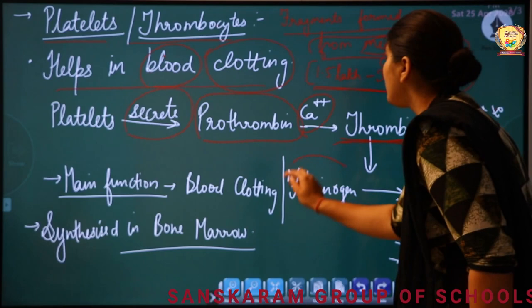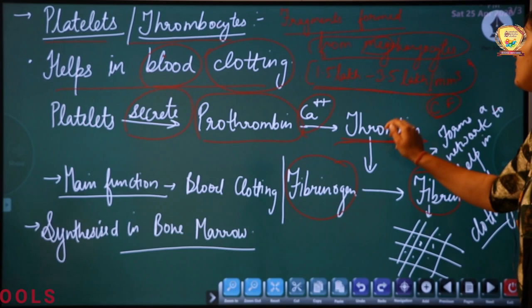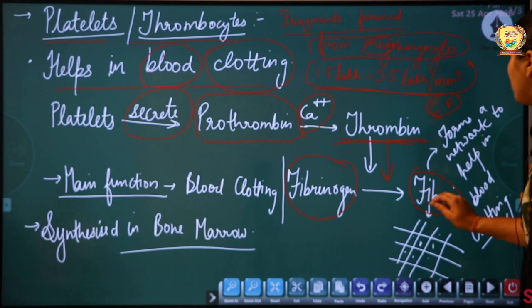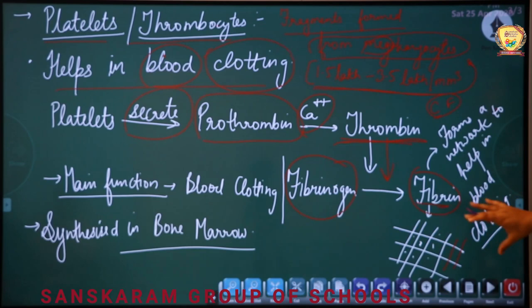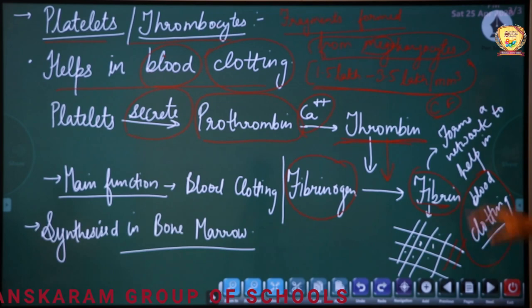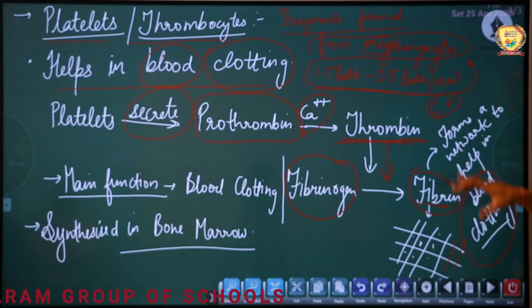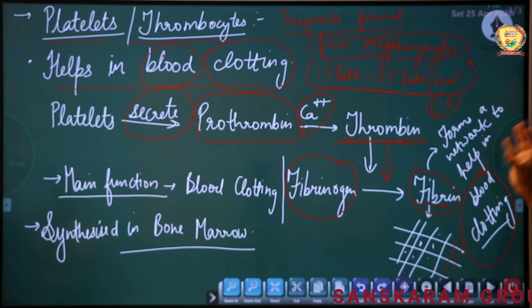Fibrin forms a network-like structure. Blood cells get trapped in that network, causing blood to clot. So in summary: prothrombin with the help of calcium ions gets converted to thrombin; thrombin converts fibrinogen to fibrin; fibrin forms a network in which blood cells are trapped and blood clots. The main function of platelets is blood clotting. Just like RBCs, platelets are also synthesized in the bone marrow.